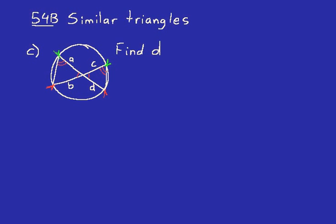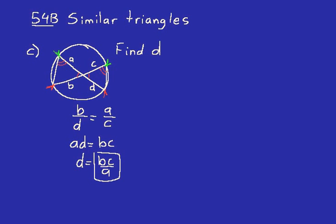The measure of inscribed angles — those where the vertex touches the edge of the circle — is half the measure of the intercepted arc. We don't need to know the actual angle values right now. Let's set up our proportions. For the two sides opposite the double tick marks, going left to right, we say B over D. Set that equal to the sides opposite no tick marks: A over C. So B over D equals A over C, and we're solving for D. Cross-multiplying gives AD equals BC, then dividing both sides by A gives D equals BC over A. So instead of a numerical answer, we get the abstract expression BC over A.